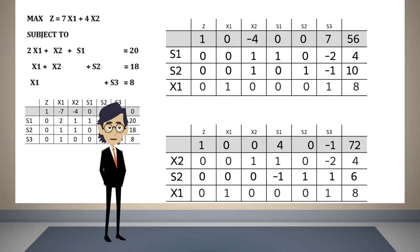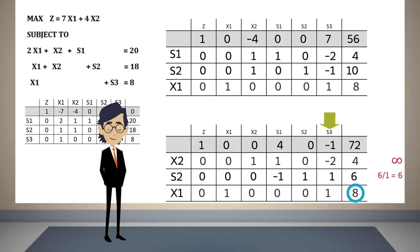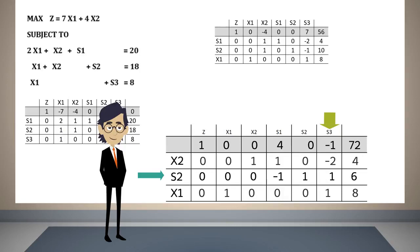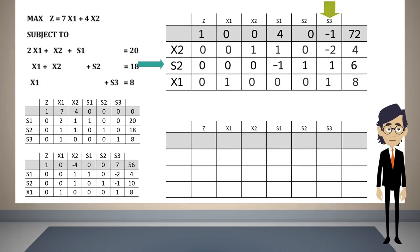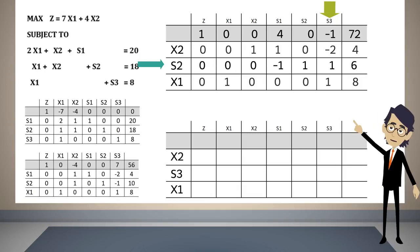But there is still a negative number in the objective function. Therefore, s3 must enter the basis. In the first constraint, since the coefficient of s3 is negative, there is no limit for the increase of this variable. In the second constraint, s3 can increase up to six units, and in the third constraint up to eight units. Therefore, s2 will leave the basis. We reduce the information to make room for the fourth table.